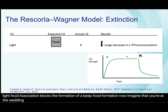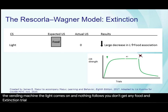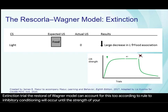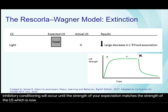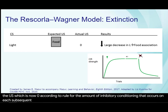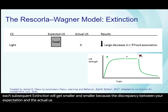Now imagine that you're at the vending machine, the light comes on and nothing follows — you don't get any food. An extinction trial. The Rescorla-Wagner model can account for this too. According to rule two, inhibitory conditioning will occur until the strength of your expectation matches the strength of the US, which is now zero. According to rule four, the amount of inhibitory conditioning that occurs on each subsequent extinction trial will get smaller and smaller because the discrepancy between your expectation and the actual US, now zero, is decreasing. Put them together and this time you get an extinction curve.